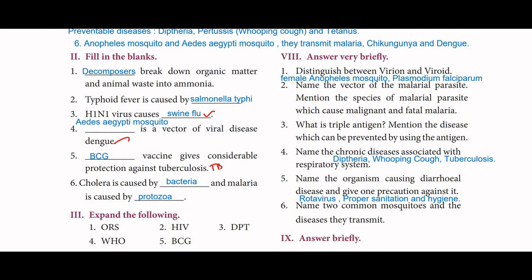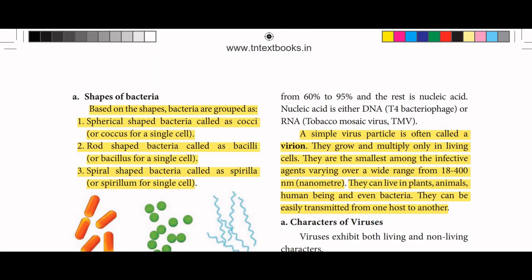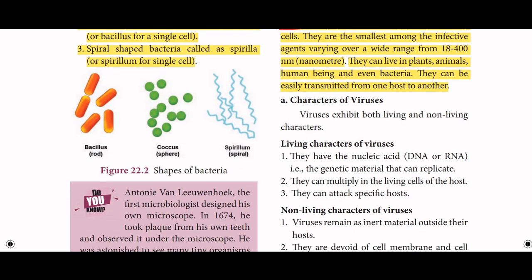Next, answer very briefly. First: distinguish between virion and viroid — from page number 259. A simple virus particle is called a virion. They grow and multiply only in living cells. They are the smallest among infective agents, varying over a wide range of 18 to 400 nanometers. They can live in plants, animals, human beings, and even bacteria. They can be easily transmitted from one host to another.